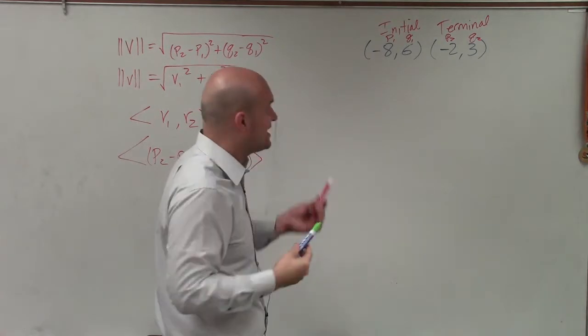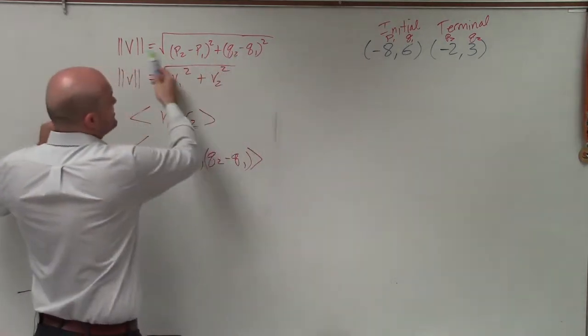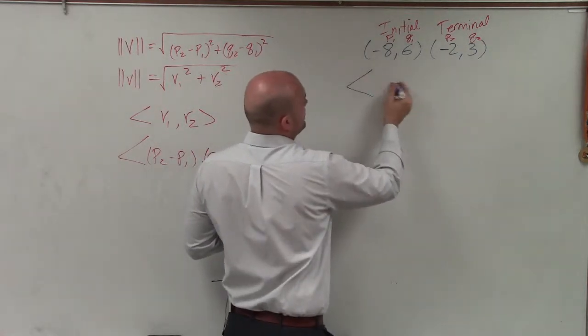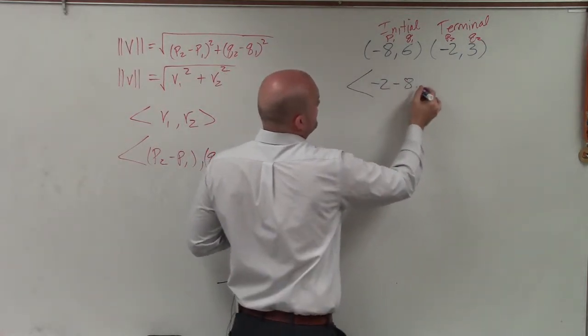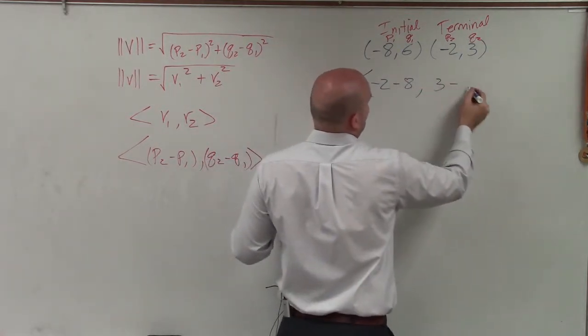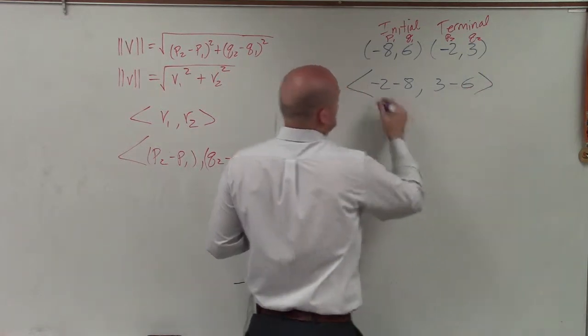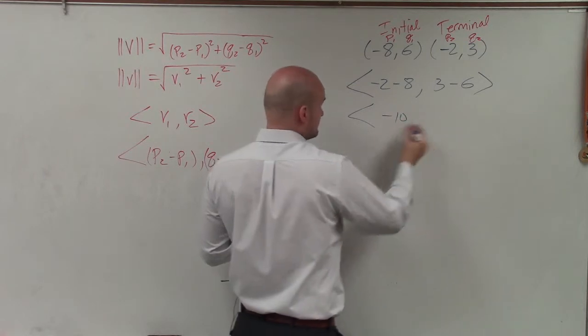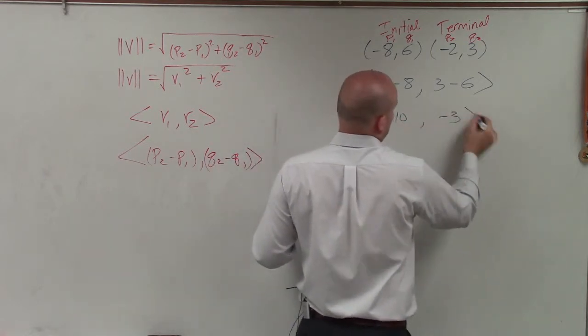To determine my component form, which I'm going to have to use anyways, even if I plug it into this formula, is simply going to be negative 2 minus 8, comma, 3 minus 6. So therefore, I have negative 10, comma, negative 3.